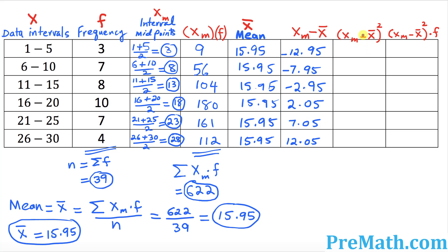In the next step, as you can see, we will be squaring whatever we got in the previous column — that is column number 6. So negative 12.95 squared turns out to be 167.7. Negative 7.95 squared turns out to be 63.2. I will fill out the remaining values by simply squaring each entry in the previous column.